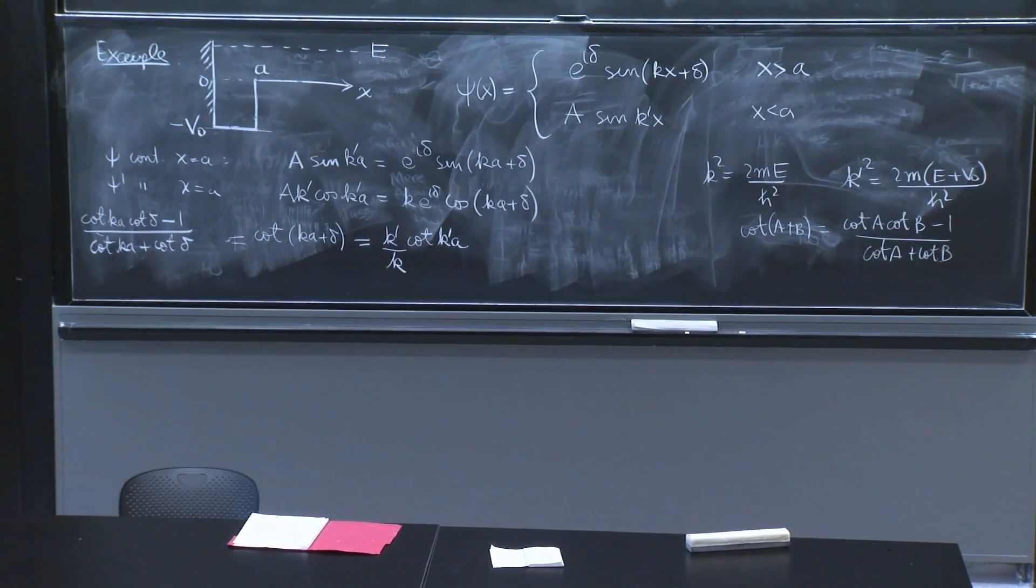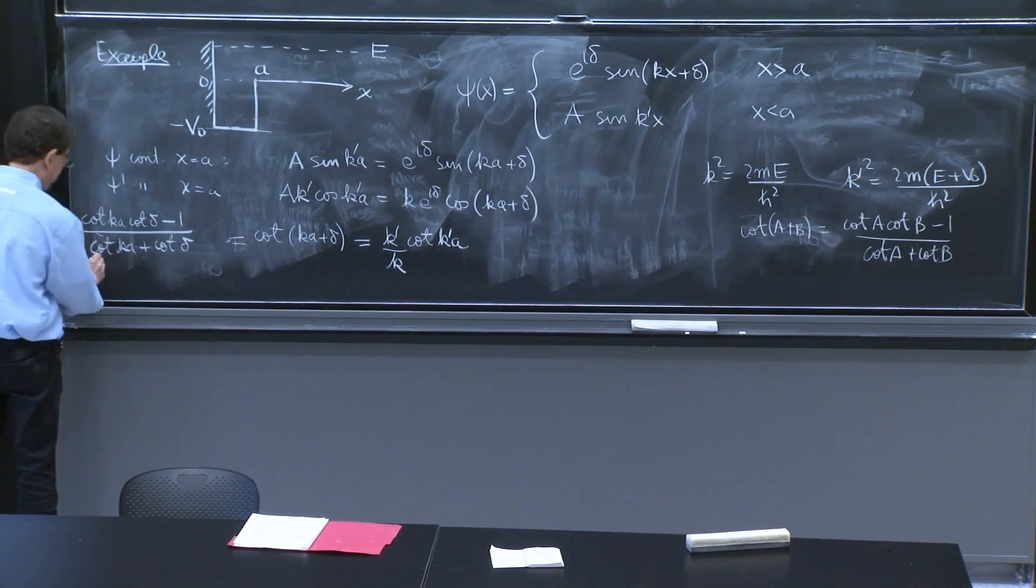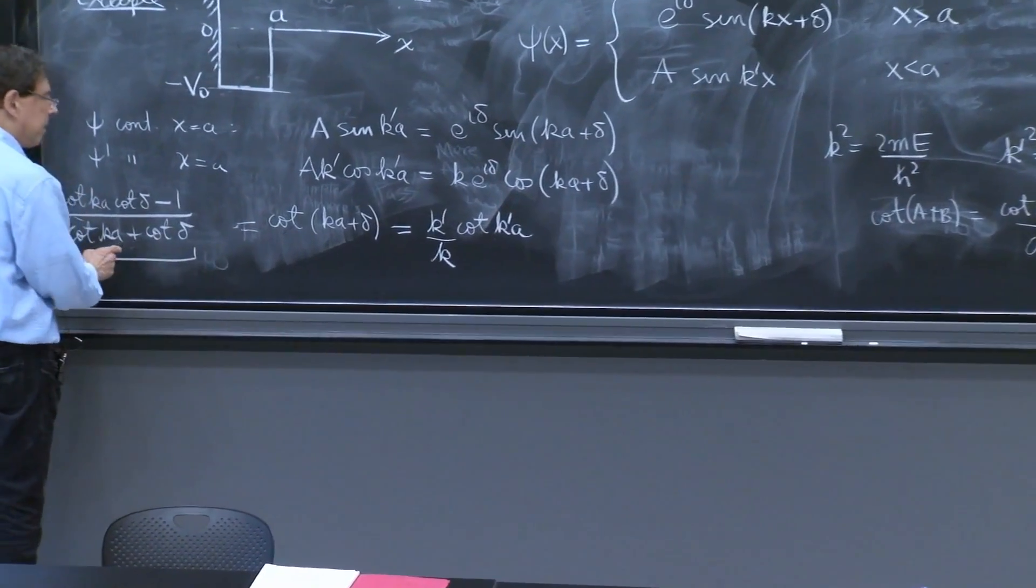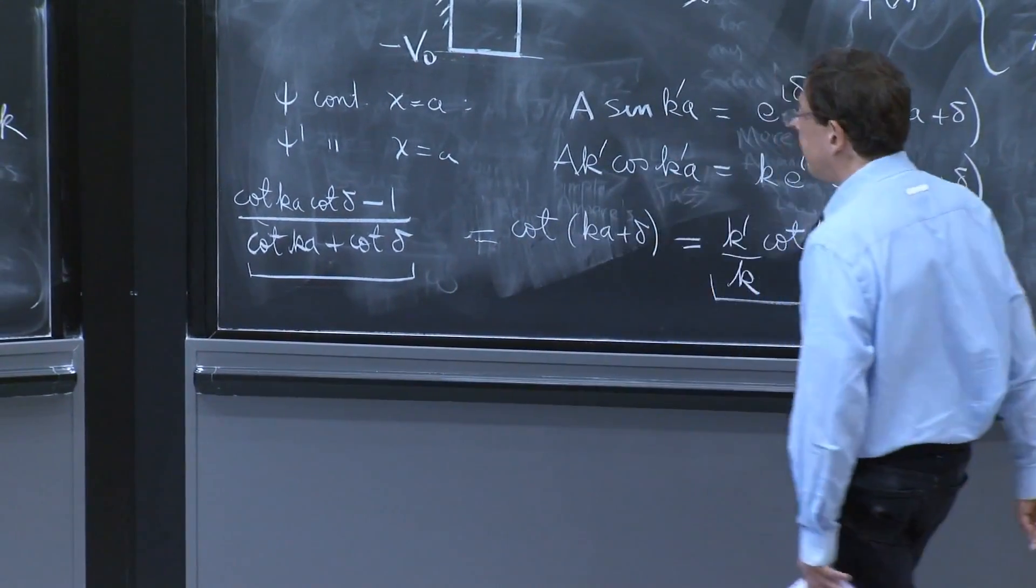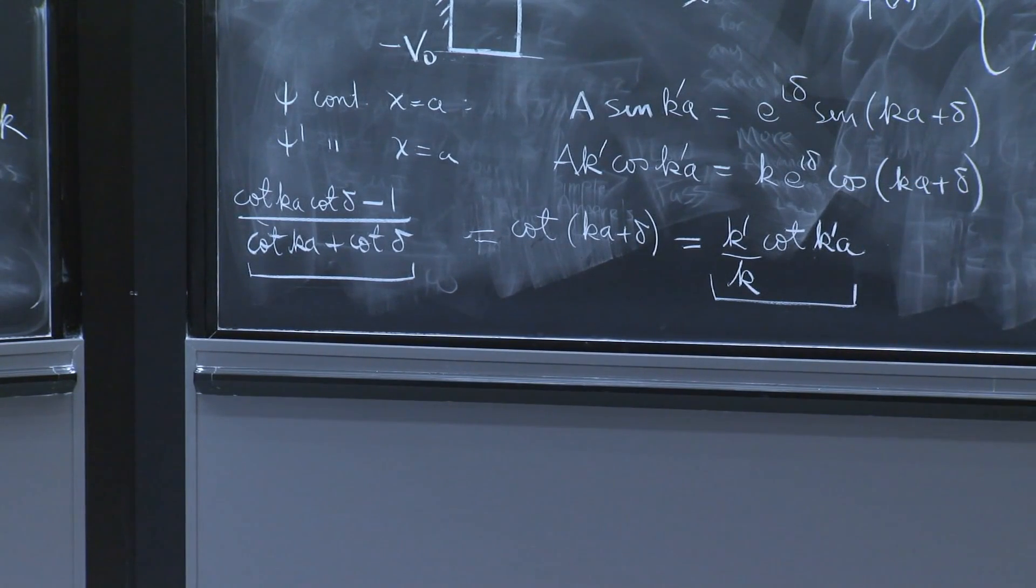And now equating left hand side to this right hand side, you can solve for cotangent of delta. So cotangent of delta can be solved for. And here is the answer. Here,